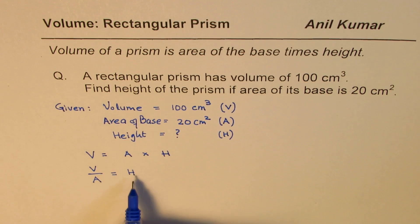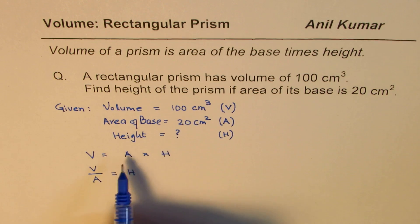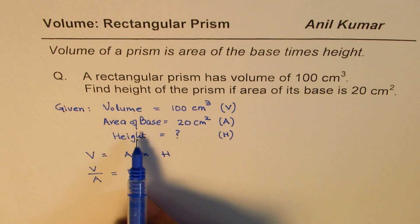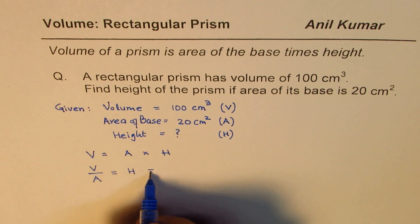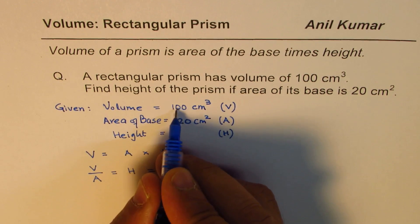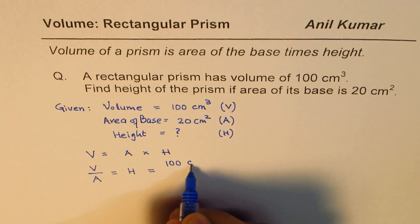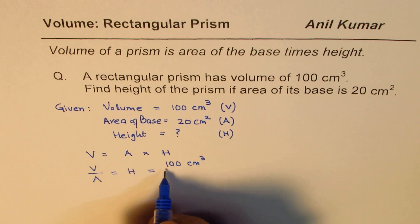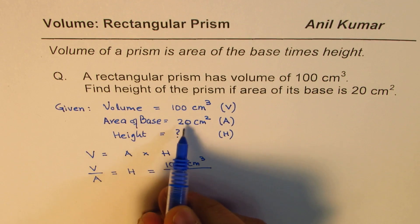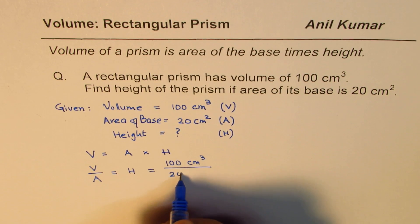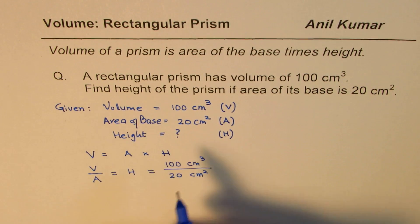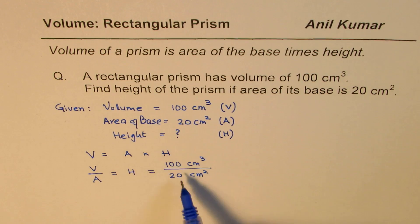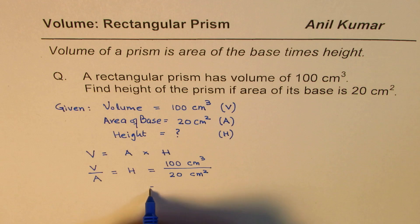Since we know volume is 100 cm cubed and area of base is 20 cm squared, we can calculate height. Height H equals volume divided by area of base: H = 100 cm³ ÷ 20 cm². So when you divide volume by area of base, you get the height.